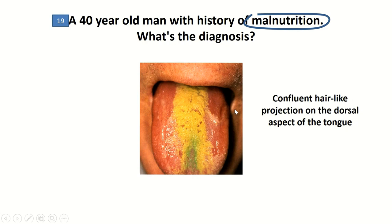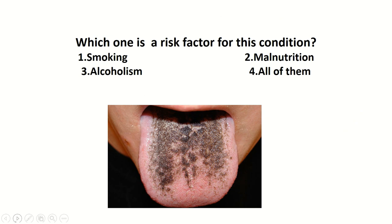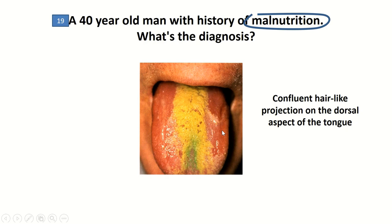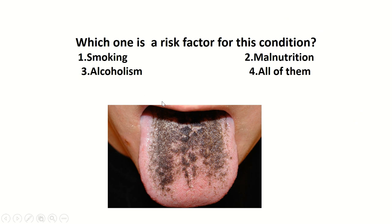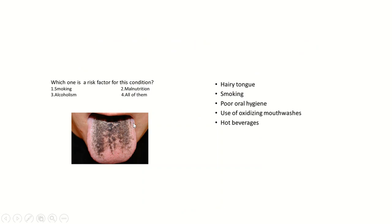A 40-year-old with a history of malnutrition: there are confluent hair-like projections on the dorsal aspect of the tongue in the midline — diagnosis of hairy tongue. The color of hairy tongue can be yellow or black. Risk factors include malnutrition, smoking, poor oral hygiene, hot beverages, and use of oxidizing mouthwashes. The correct answer for what is NOT a risk factor is alcoholism.